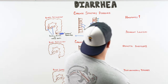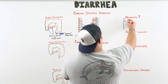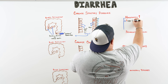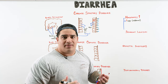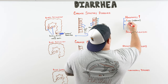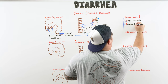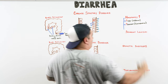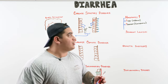Key hormones causing chronic secretory diarrhea: first, elevated VIP — vasoactive intestinal peptide — seen in VIPoma. Second, elevated gastrin, which causes secretion and is released by a gastrinoma, seen in Zollinger-Ellison syndrome where a pancreatic or small bowel tumor pumps out excessive gastrin.